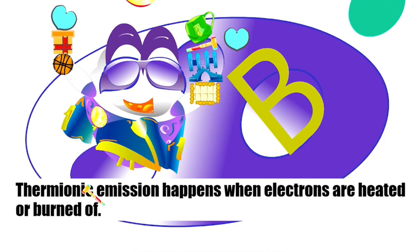Within the tube, you're going to have heated metal emitting negative charge electrons towards a positive anode. Some of the negative charges are going to go straight in through a hole of the anode, creating a beam.